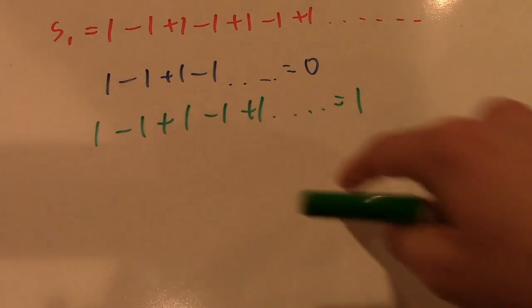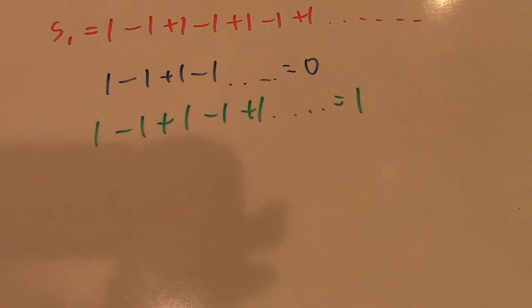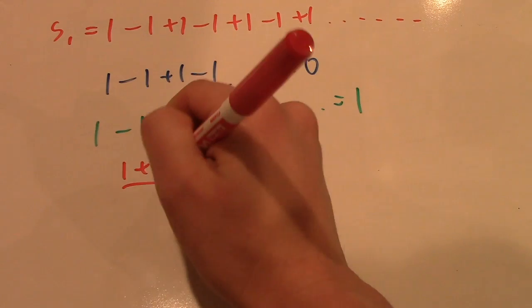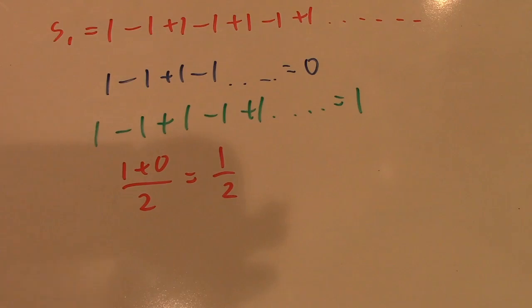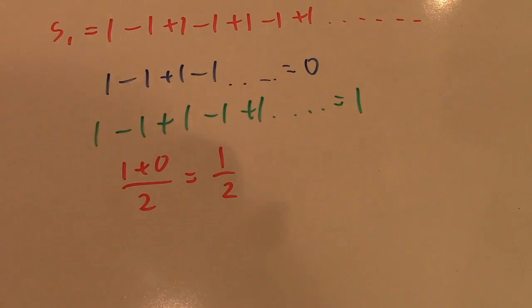Now, both of these cases involve us stopping it at some point, which means that it is no longer an infinite sum. Now, to figure out the infinite sum, we essentially take our two possible options and we just average them. So, 1 plus 0 divided by 2, that's just 1 half. So, the answer to 1 minus 1 plus 1 minus 1, and so on, is 1 half. Now, there are other proofs for this, but I feel this is the easiest to understand.